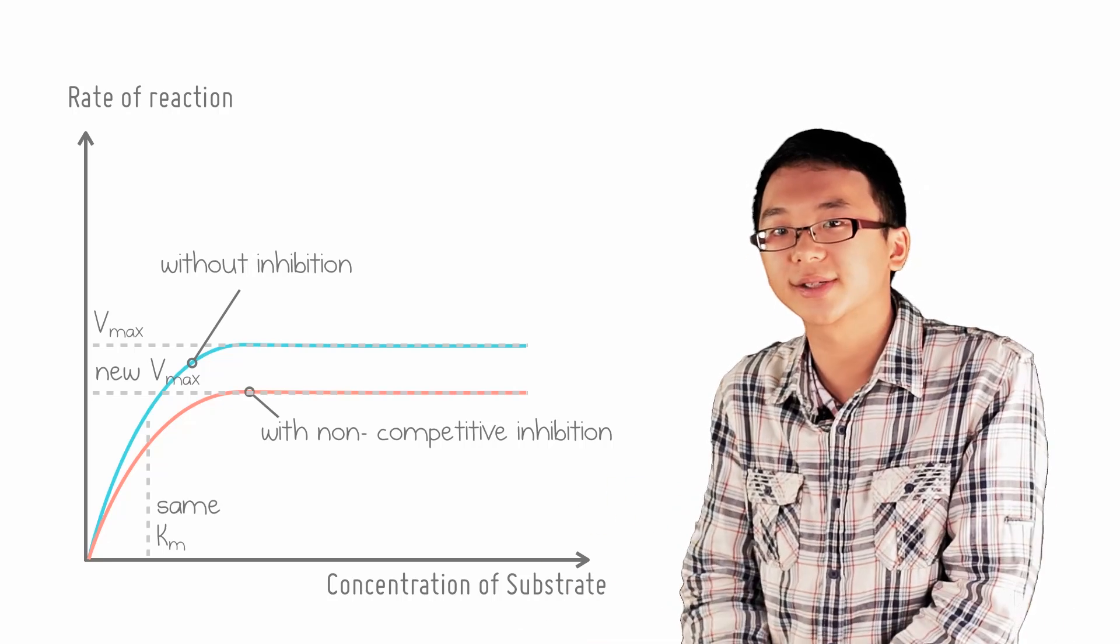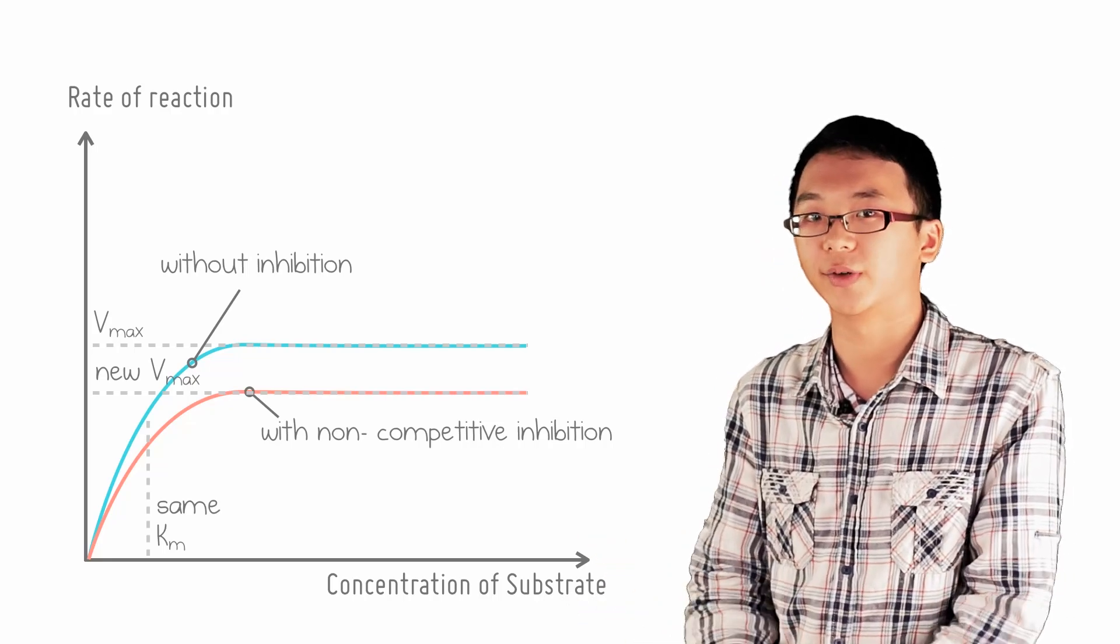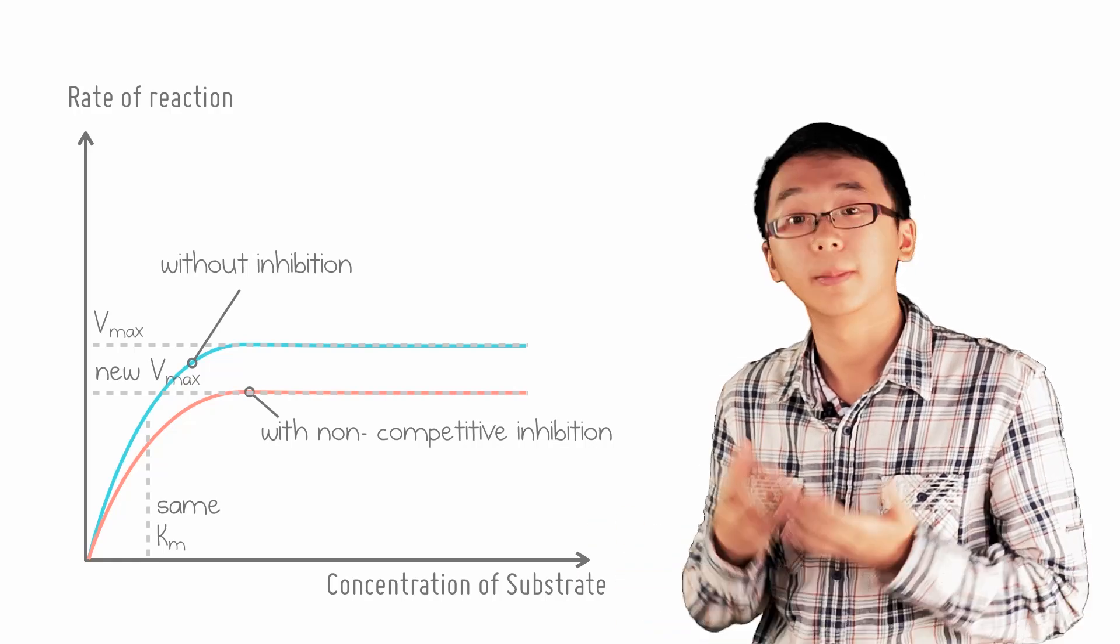You may be curious as to what happens if the inhibitor had different affinities for the enzyme and the enzyme-substrate complex. Well, that's what we call mixed inhibition.